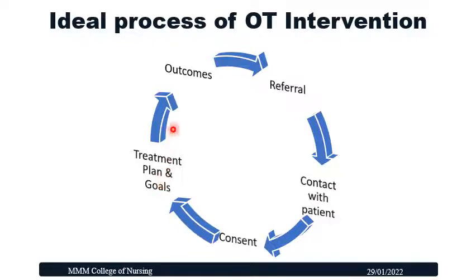Once the outcome is achieved, the patient may be referred if necessary. When the patient is sent to the community, they are referred to the appropriate community center, and the patient must have regular follow-up. This is what the process of occupational therapy intervention is all about.